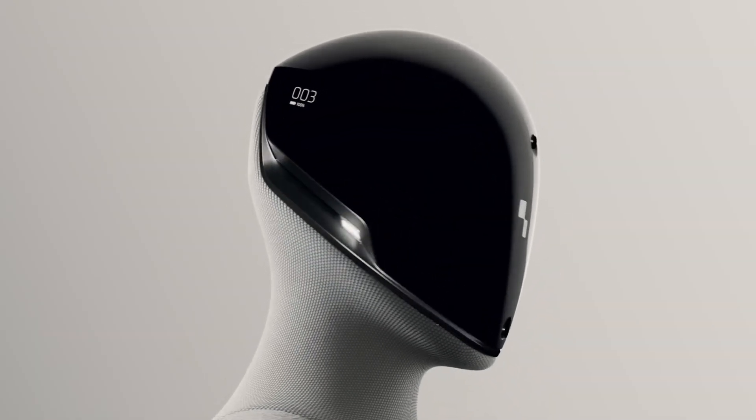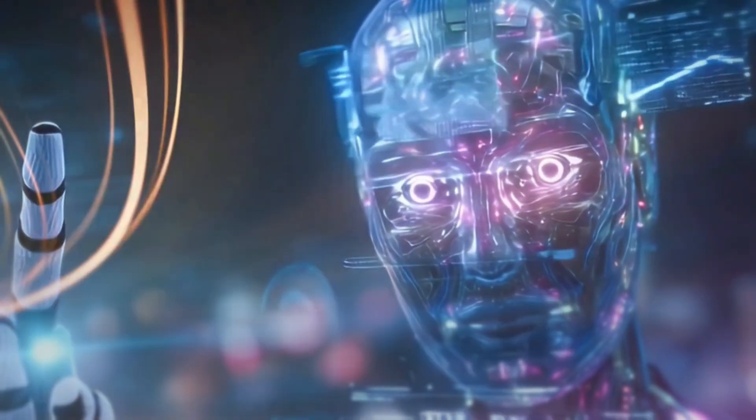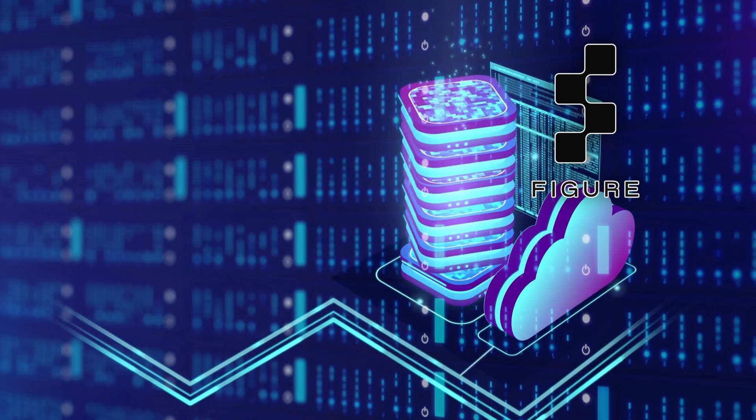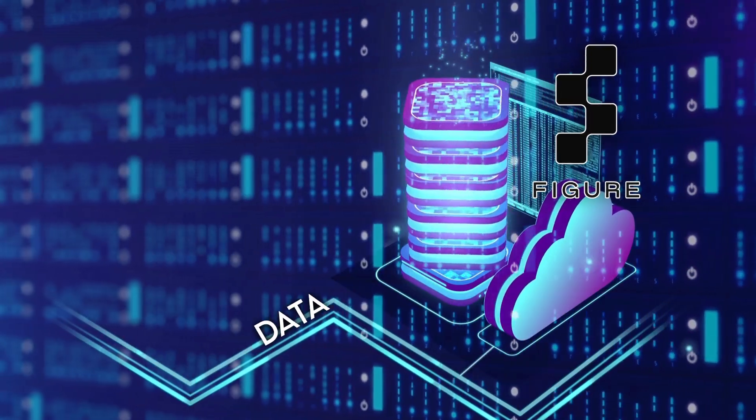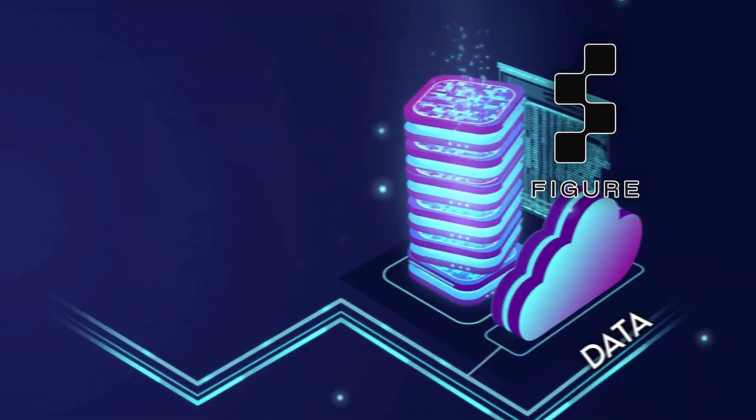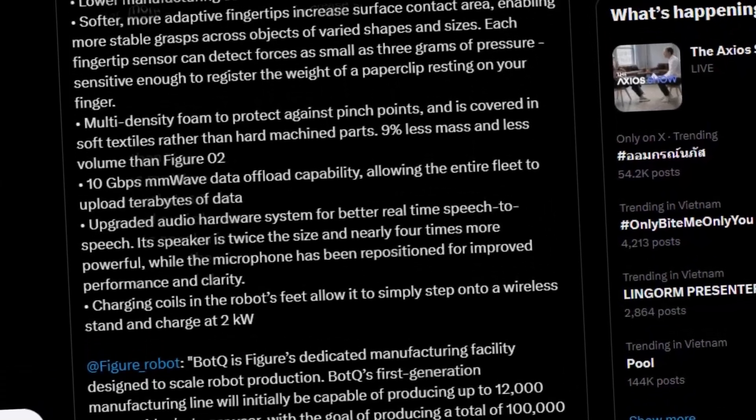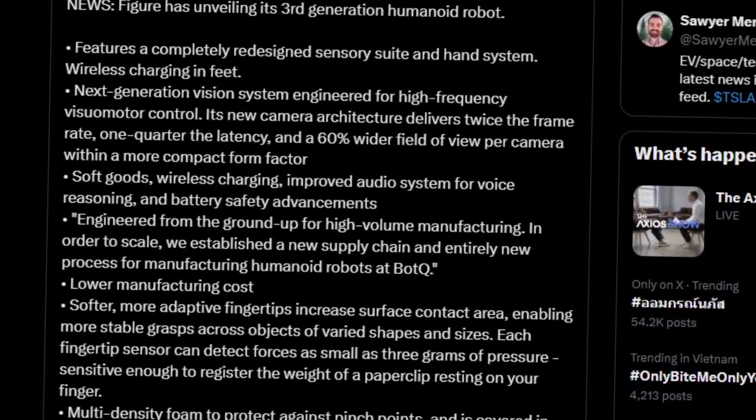There's also a data angle that sets Figure apart. Each robot can offload at 10 gigabits per second using millimeter wave bandwidth, so entire fleets can upload terabytes of data back to Figure for training and improvement. That's how Helix learns: a closed loop from pixels to action that scales across every deployed unit.